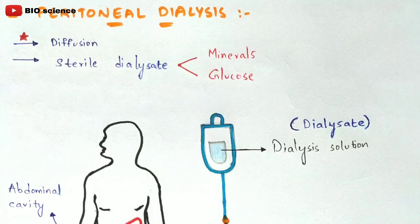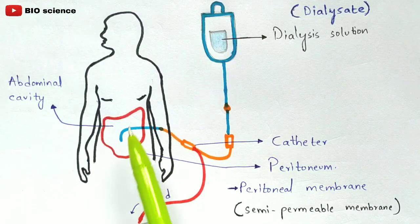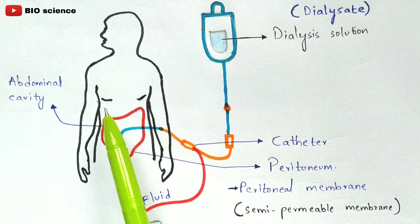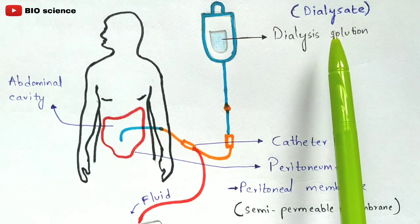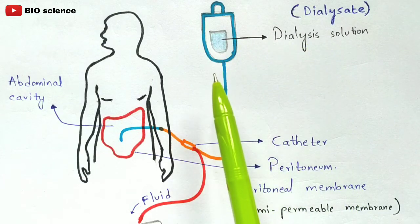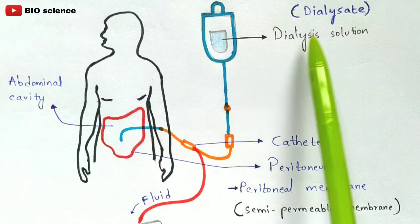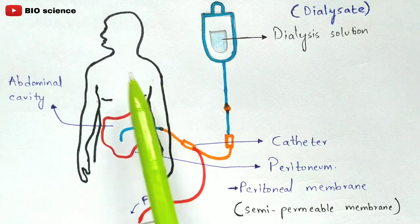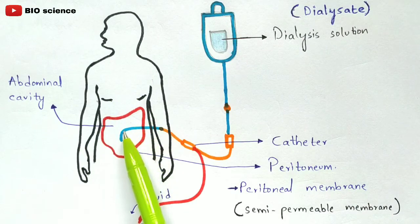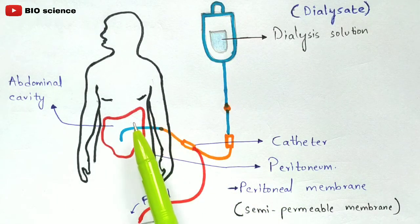Let's say the patient's kidneys have failed up to 70–80%. To perform peritoneal dialysis, a catheter is used to introduce the dialysate solution — which is rich in minerals and glucose — into the abdominal cavity of the patient.